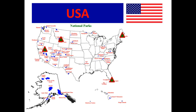Here we can see a map of the United States with all national parks marked in blue. A majority are in the western half and in Alaska, where the parks are quite large in size. This map is a bit dated — I'm recording this in 2020, and I suspect no new national parks were created during the Trump administration.